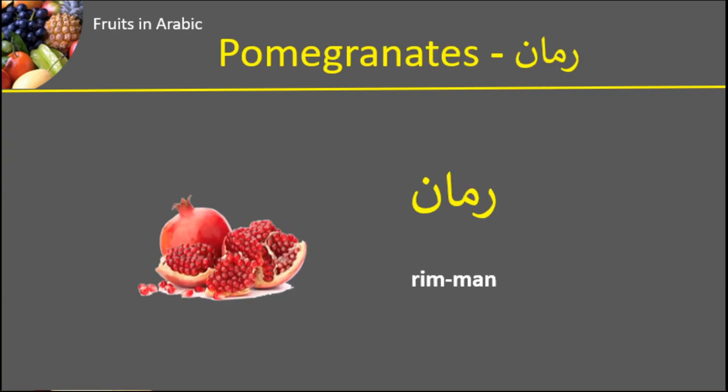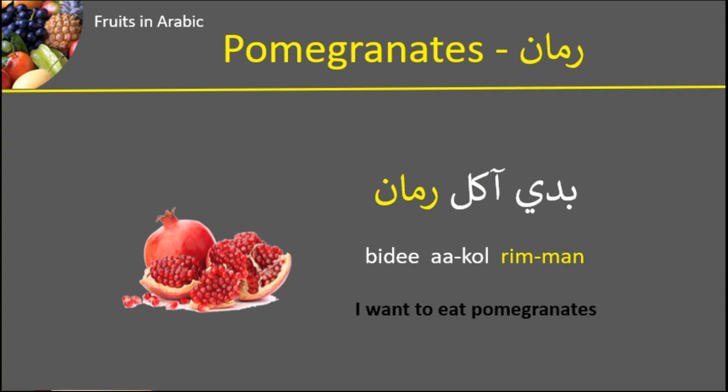Next one. رمّان. Pomegranates. رمّان. Here is an example of رمّان used in a sentence: بدي آكل رمّان — I want to eat pomegranates. بدي آكل رمّان.